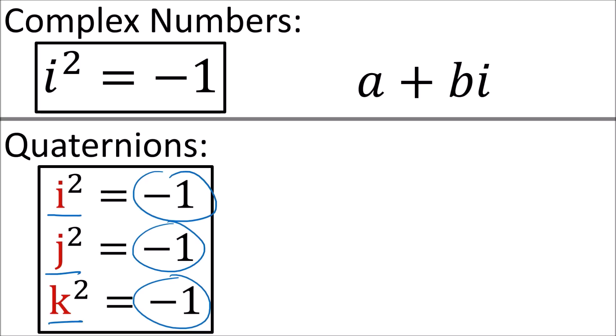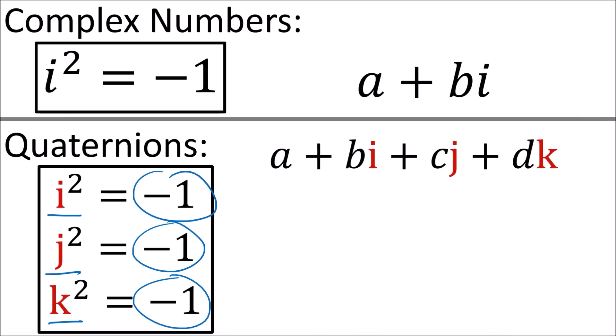We can use these to write quaternions, which have the form a plus bi plus cj plus dk, where a, b, c, d are all real coefficients.